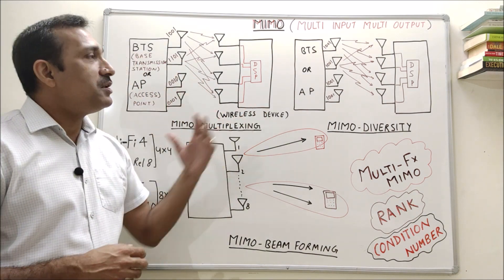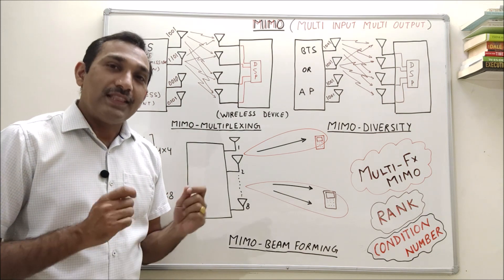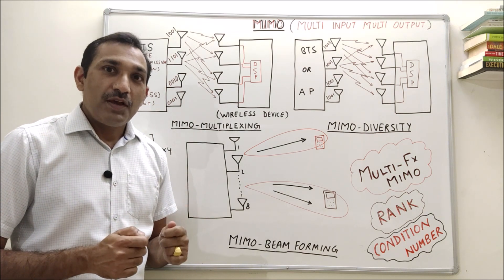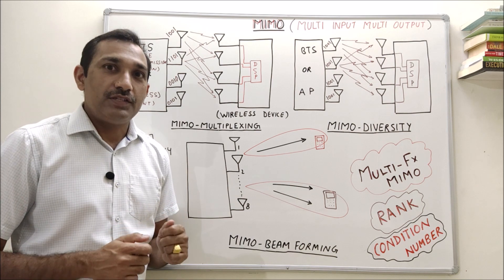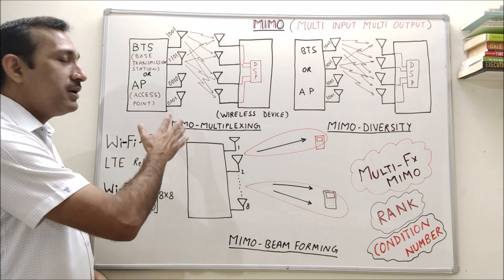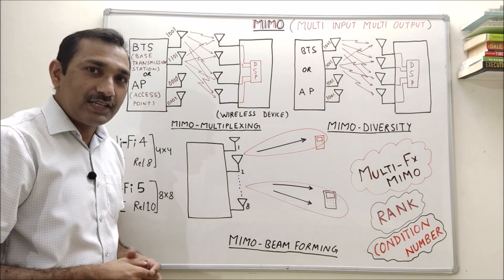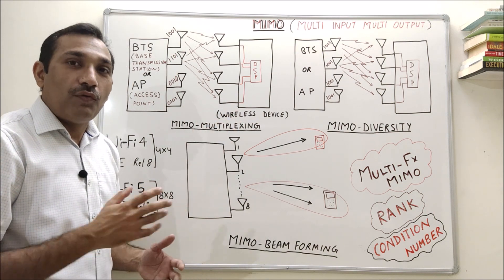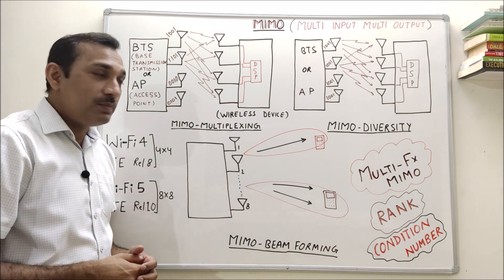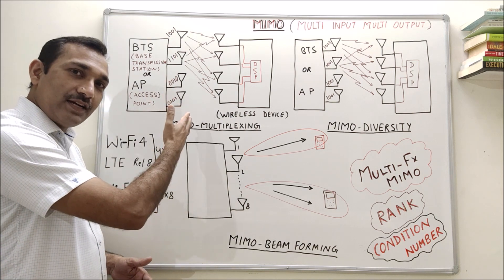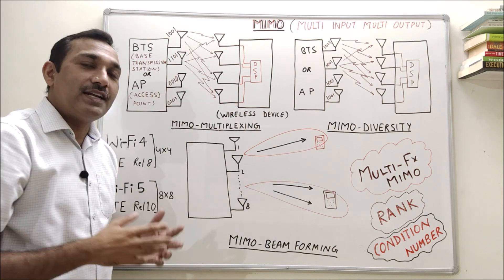MIMO has multiple input and multiple output. That means it uses multi-antenna technology where we have multiple antennas at the transmitter and at the receiver. For example, let's talk about 4 x 4 MIMO. That means we have four antennas at the transmitter and four antennas at the receiver.